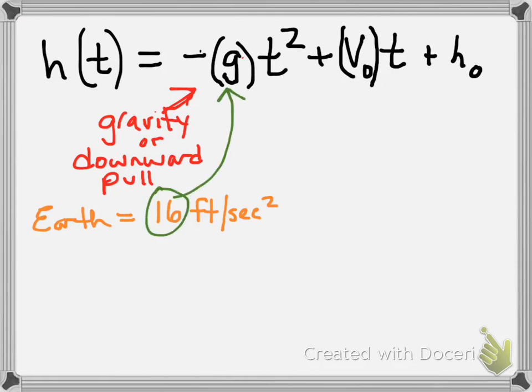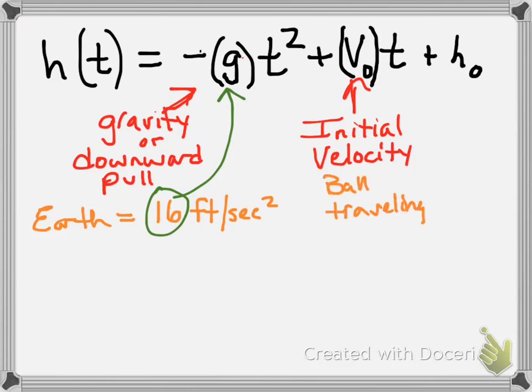All right, next let's discuss V of zero or V of O. That's called our initial velocity. So it's initial because V of zero, meaning it hasn't happened yet or it's at the beginning. So that's why it's zero. And velocity, that means like if we were to throw an object like a baseball. So if a baseball was thrown at a velocity of 24 feet per second.